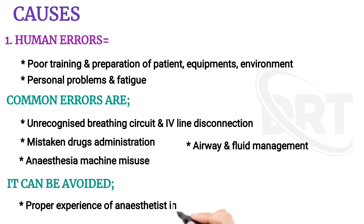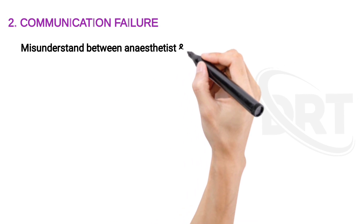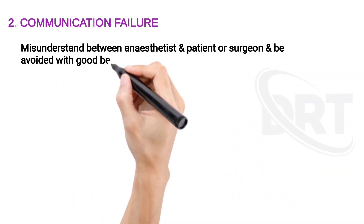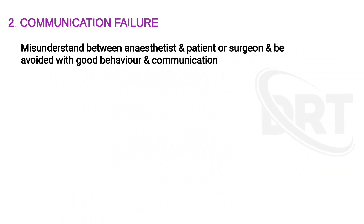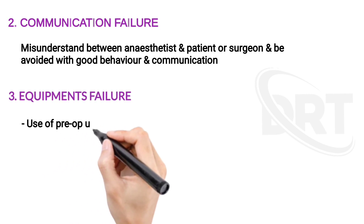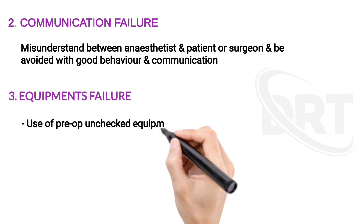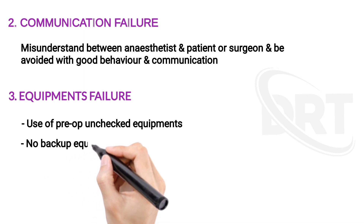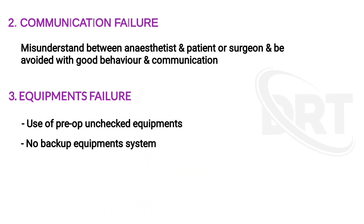Errors can be avoided through proper experience of the anesthetist in the task allotted to them, keeping in mind their rights and personal issues. Communication failure — misunderstanding between the anesthetist and patient or surgeon — can be avoided with good behavior and communication. Equipment failure includes use of unchecked equipment pre-operatively and no backup equipment available.